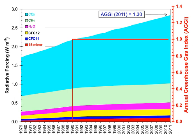Some greenhouse gases remain in the atmosphere for decades or even centuries, and therefore can affect Earth's energy balance over a long period. Radiative forcing quantifies the effect of factors that influence Earth's energy balance, including changes in the concentrations of greenhouse gases. Positive radiative forcing leads to warming by increasing the net incoming energy, whereas negative radiative forcing leads to cooling.